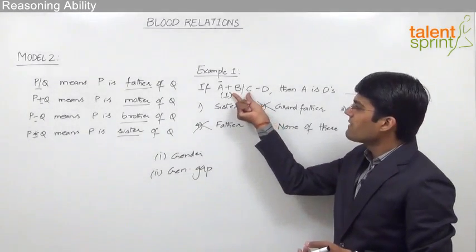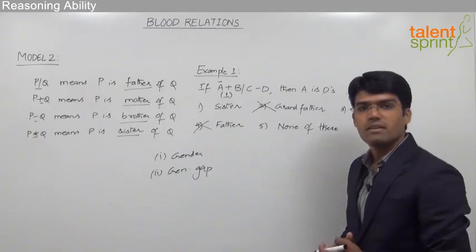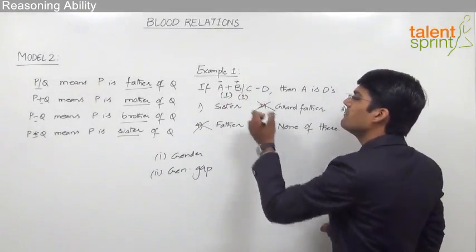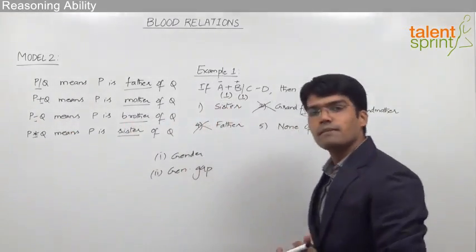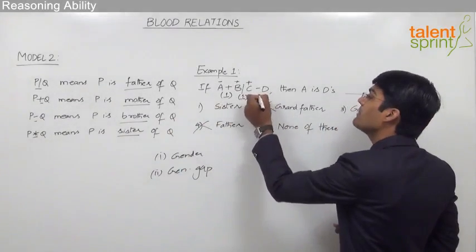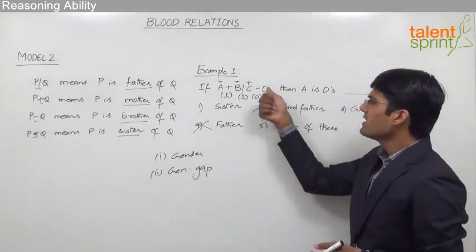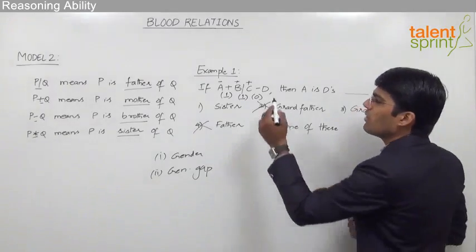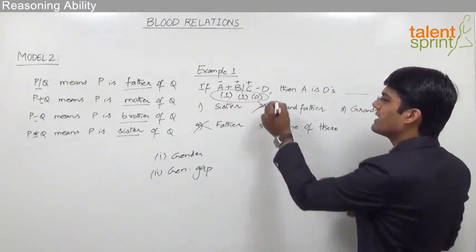Moving on to the next set: B divided by C means B is the father of C, so B is male and the generation gap between B and C is one. Then C minus D means C is the brother of D, so C is male. The generation gap between C and D is zero because they belong to the same generation as siblings. The gender of D cannot be determined as there is no information given.